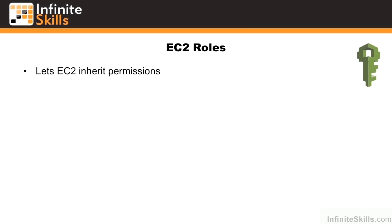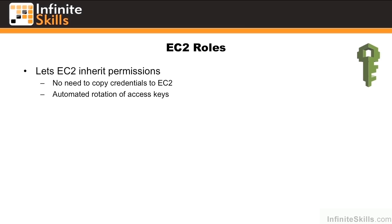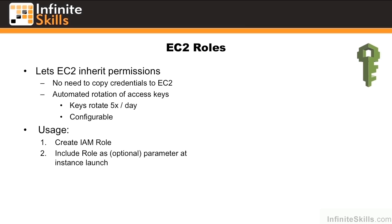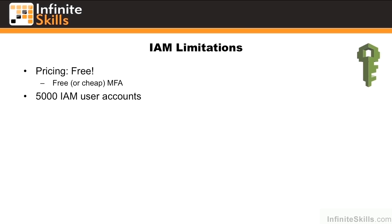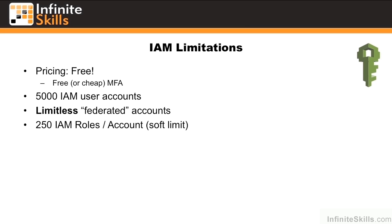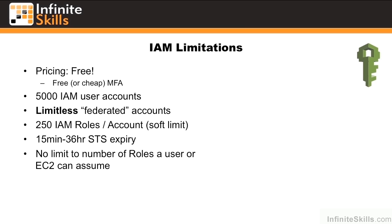EC2 roles let EC2 instances inherit permissions, avoiding the need to copy sensitive credentials into the EC2 instance itself. You can also specify automated rotation of the access keys, which is done up to five times a day and is configurable. A typical usage is to create an IAM role, include the role as an optional parameter at instance launch, and then from the instance sign requests to services with the role's access key. IAM does have limitations, but price isn't one of them — pricing for IAM is completely free, and it comes with free or cheap MFA. It does have a 5,000 permanent IAM user account limit, but you can create a limitless number of federated accounts. IAM allows for only 250 roles per account, though this is a soft limit that can be raised by contacting AWS. STS tokens expire from 15 minutes to 36 hours, and there is no limit to the number of roles a user or EC2 can assume.